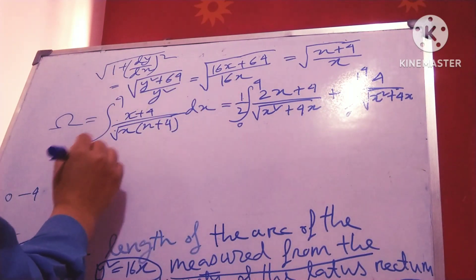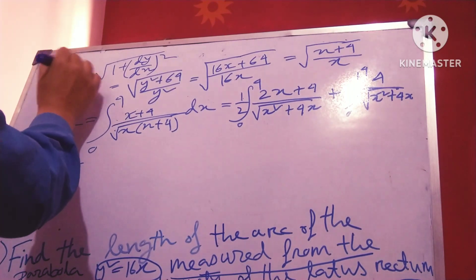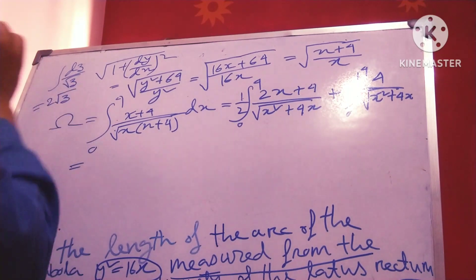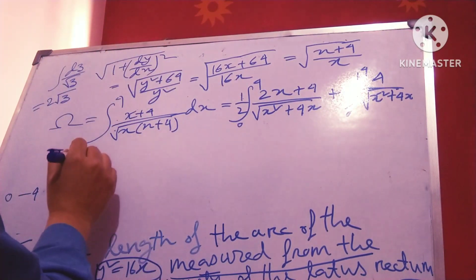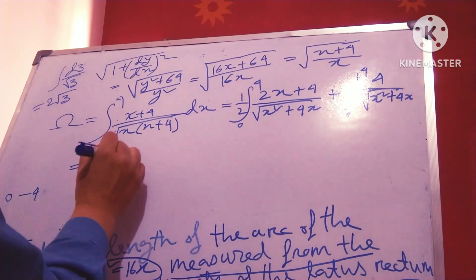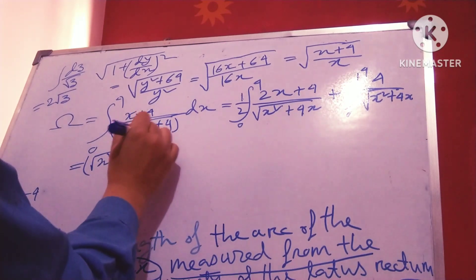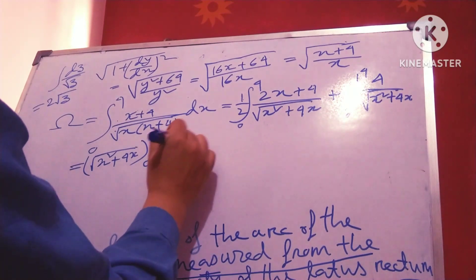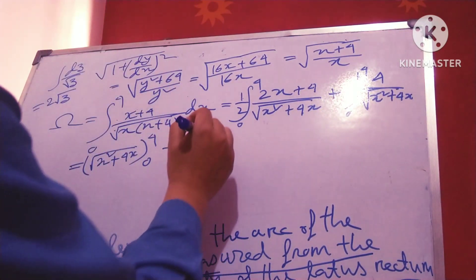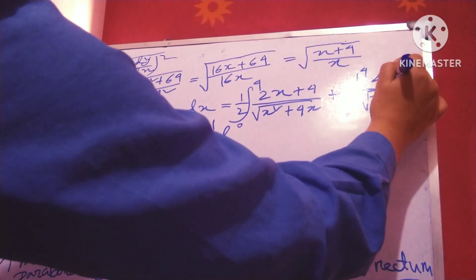Using the formula — the integral of dz divided by root of z equals 2 root z — we get, after simplification, the expression 2x + 4 with limits 0 to 4, times root over x² + 4x, plus 4 times the integral from 0 to 4 of dx divided by root over (x+2)² minus 4.